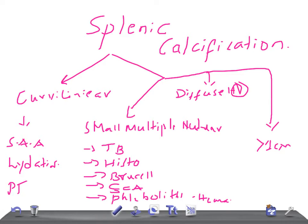For diffuse homogeneous or granular calcification, the causes can be sickle cell anemia or Pneumocystis carinii infection. For a solitary lesion greater than one centimeter in size, the cause is a healed infarct or hematoma.